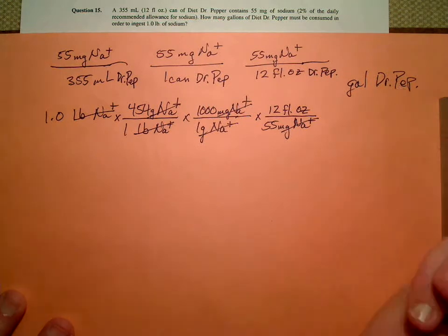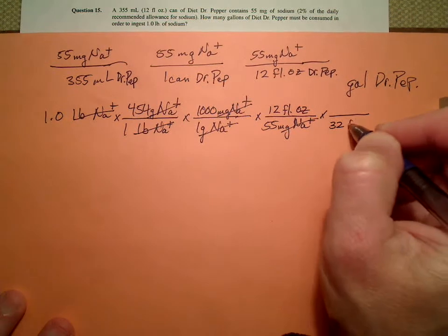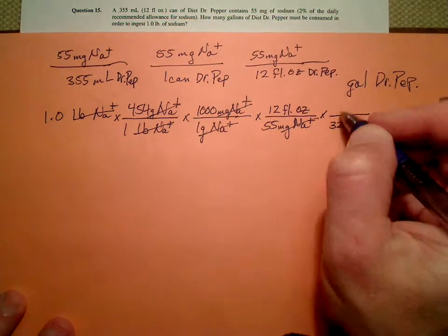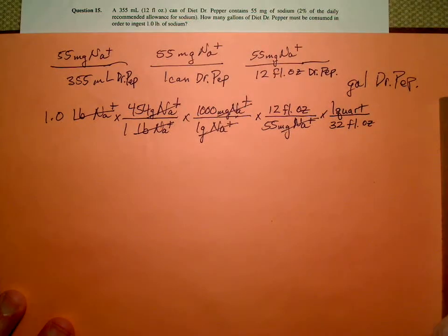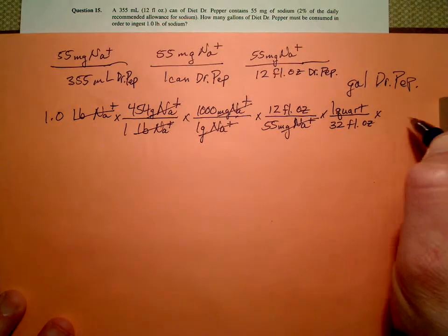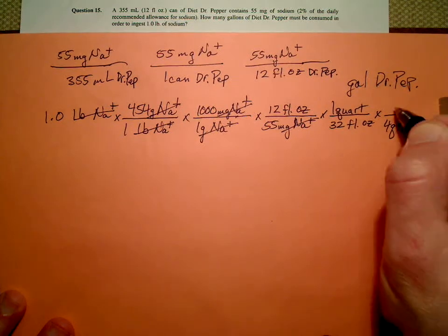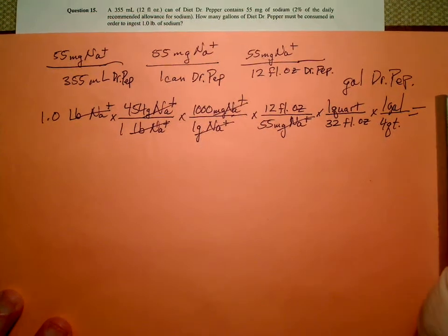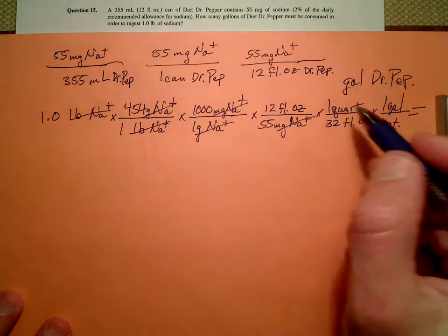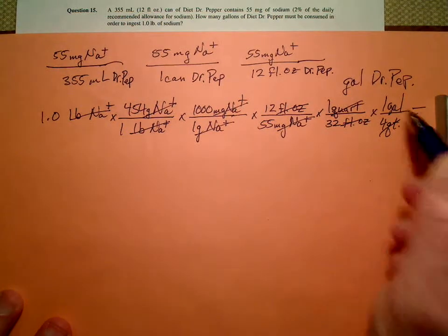I need to get to gallons. I don't know how many ounces are in a gallon, but I do remember that there are 32 fluid ounces in one quart. And there are four quarts in one gallon. Bingo. Now I'm ready for action. Let's double check my units. Fluid ounces cancel, fluid ounces, quarts, quarts, gallons.